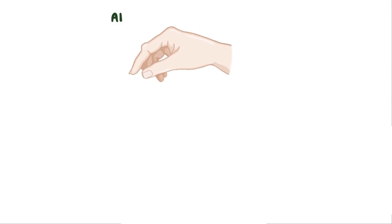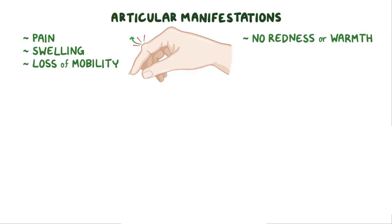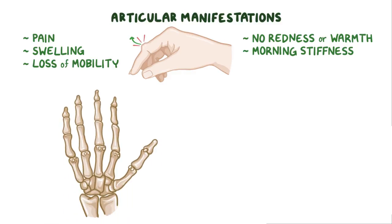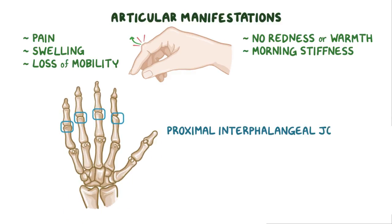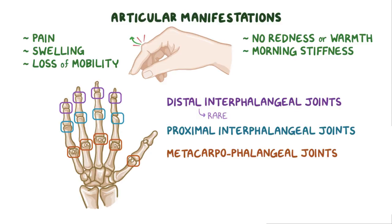The typical articular manifestations in rheumatoid arthritis are pain, swelling, and loss of mobility in the affected joints, but doesn't usually cause redness or warmth because the inflammatory process is so gradual. Usually there's morning stiffness that improves after 30 minutes of movement. The most frequent sites of involvement are the proximal interphalangeal joints and metacarpophalangeal joints of the hand.